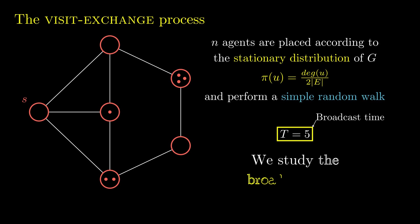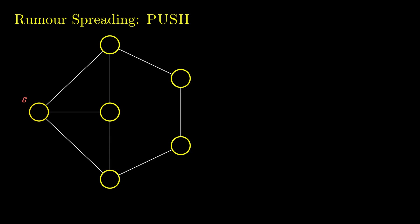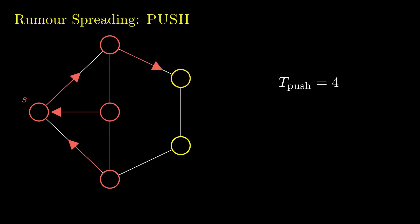In our paper, we study this value for sparse graphs. As mentioned earlier, rumor spreading protocols have been studied extensively. Perhaps the simplest of these is push, where at each round every informed vertex informs a randomly selected neighbor. Again, the broadcast time is defined similarly. The broadcast time of push and related processes is known with respect to various graph parameters.